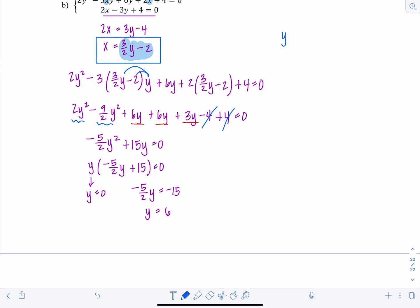So for y equals 0, I'd get x is 3 halves times 0 minus 2, which would give me negative 2.